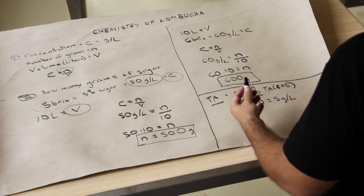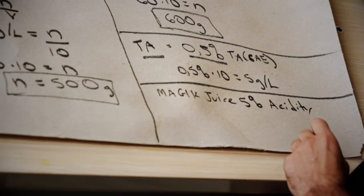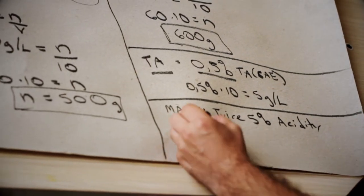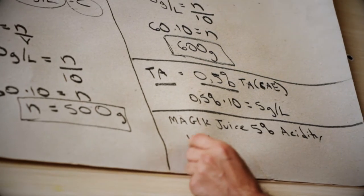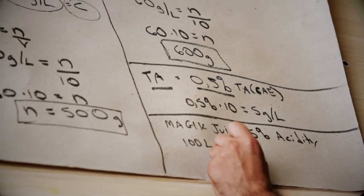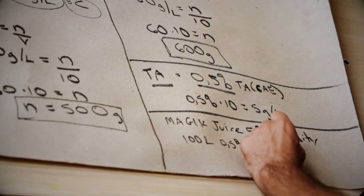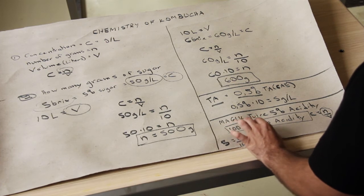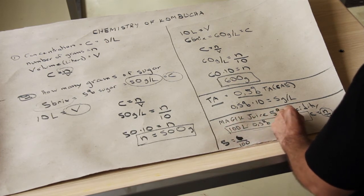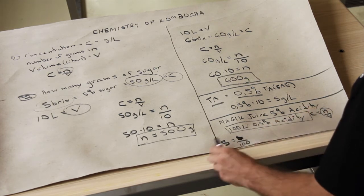And that way you can calculate how much acidity is in your product and how much acidity you want in your product. For example, if you have some magic juice that is 5% acidity and you wanted to make 100 liters of kombucha at 0.5% acidity. So if we wanted to figure out how much magic juice to put in our product to make 100 liters of product that's 0.5% acidity, we would do C equals N over V.